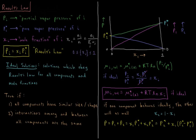This video will discuss Raoult's Law for ideal solutions. PI is the partial vapor pressure of substance I in our mixture of various chemical components in a liquid solution. PI star would be the vapor pressure of pure I, so the pure liquid produces a vapor pressure of PI star, while the mixture produces a vapor pressure of PI.